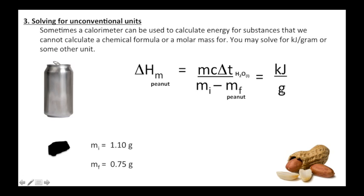So you'll see in one of our experiments, we're going to burn a peanut or a pecan or some kind of a nut, and we'll figure out the kilojoules per gram. Unconventional units.